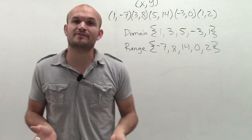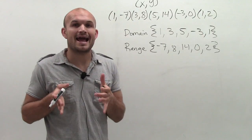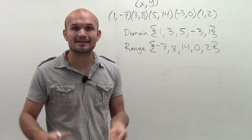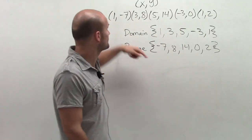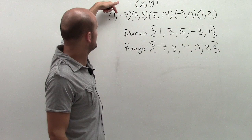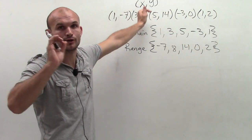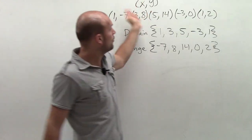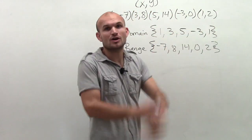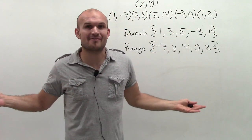So now to determine if it's a function, every element in my domain has to correspond to exactly one element in the range. So we look at this, and we say 1 corresponds to negative 7. Is that the only element that 1 corresponds to? No, 1 also corresponds to 2. So right off the bat, we don't have a function.